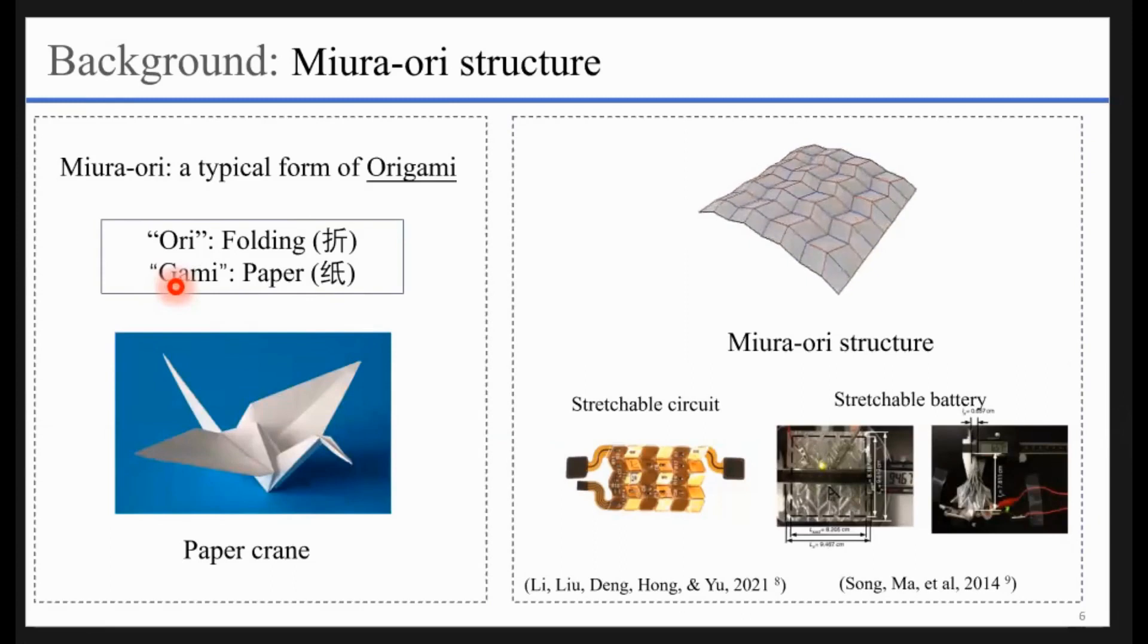In the last decades, researchers have applied origami structures into various real-life applications, especially in flexible electronics and soft robotic areas. The most popular type of origami that researchers prefer to use is the Miura-ori structure. As shown in the video, Miura-ori structure is like an array of a single unit with a certain mountain-like geometry.